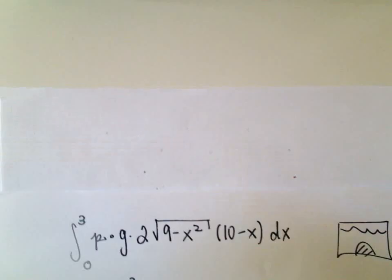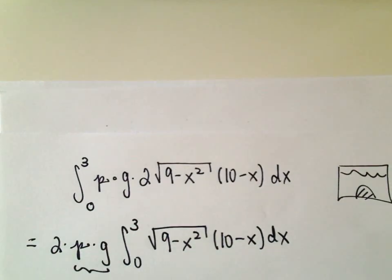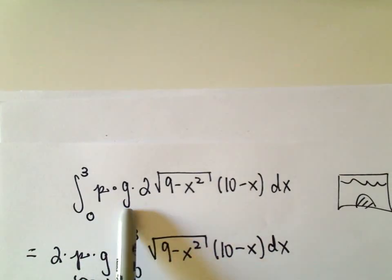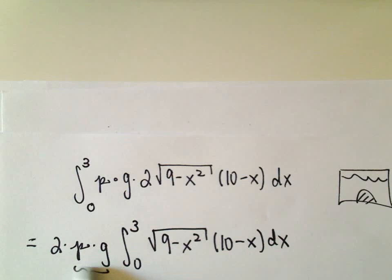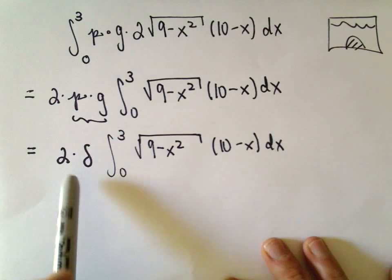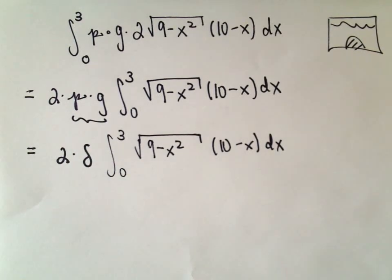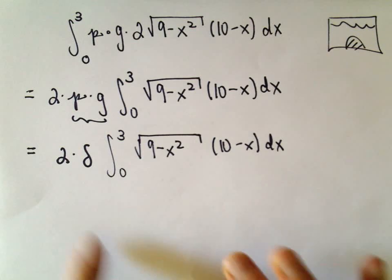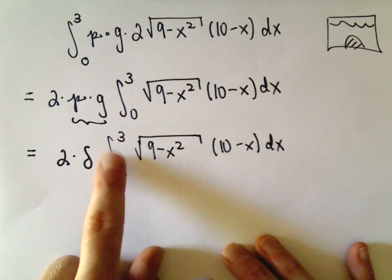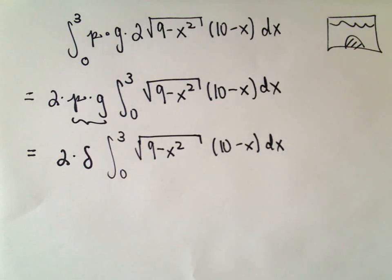I've gone ahead and jotted down a couple of steps to save some time. The first thing I'm doing is factoring out the 2 times density times gravity, giving us that part out front. Then we still have the square root of 9 minus x squared times (10 minus x). Sometimes books abbreviate density times gravity using a Greek symbol — just so you see it — and we're still integrating from 0 to 3 of the square root of 9 minus x squared times (10 minus x).